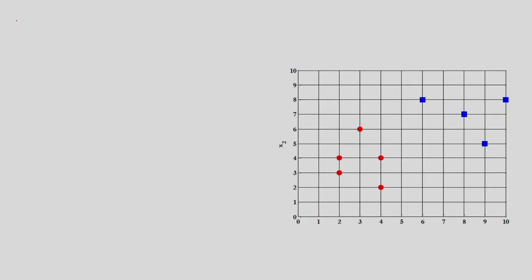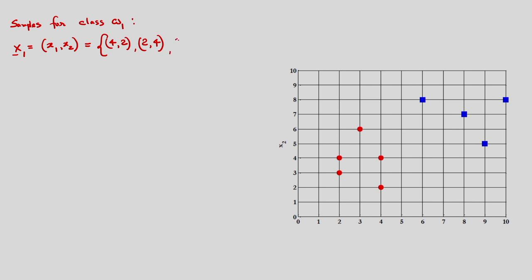In this example I am considering two classes. Suppose samples for class omega 1 — I have five samples. Similarly, suppose I am considering samples for class omega 2.